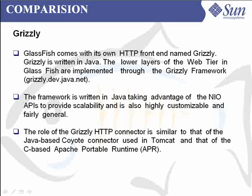Grizzly comes with its own HTTP front end also named Grizzly, and Grizzly is written in Java. The Grizzly NIO connector makes Grizzly significantly faster than Tomcat in real world conditions. Since GlassFish uses Grizzly as the HTTP frontend of the application server, performance is comparable to Apache — and because it is written in Java and integrated straight into the application server, using Apache or Sun web server in front of GlassFish is certainly no longer needed for performance reasons.